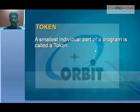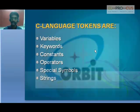A token is the smallest individual part of a program. When you combine certain smallest individual parts — like variables, keywords, constants, operators, special symbols, and strings — combining all these kinds of tokens creates one single program.